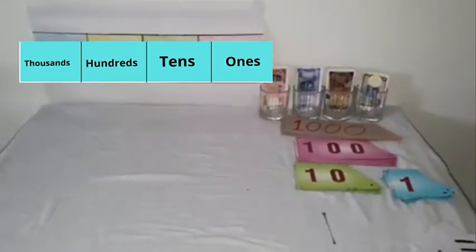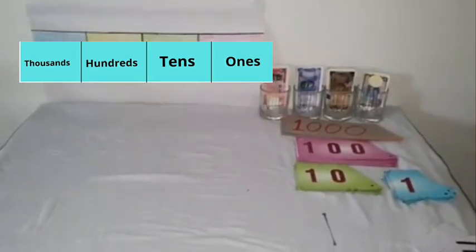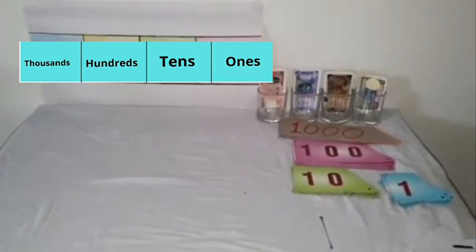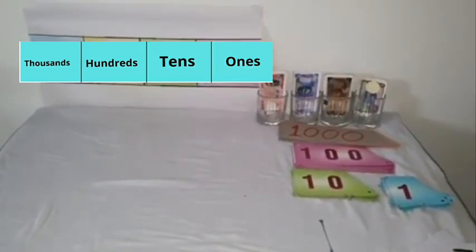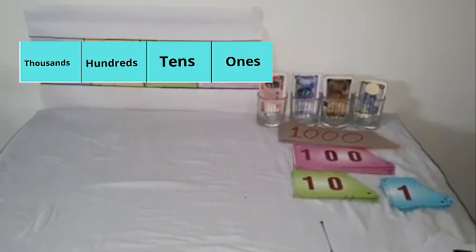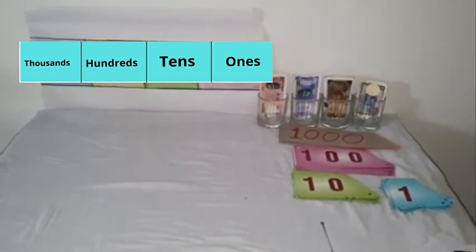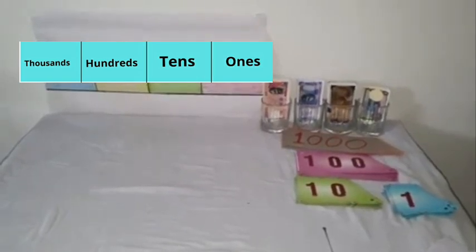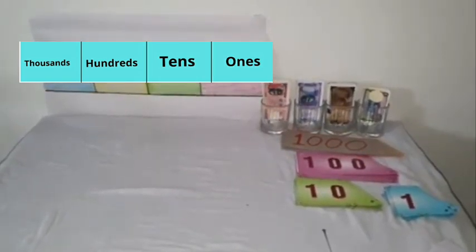Hello students, you have learned to read and write numbers using man cards and currency notes. Now you understand the place ones, tens, hundreds. The place value and expanded form of the digits is within the numbers. Today we will learn place value and expanded form of numbers.